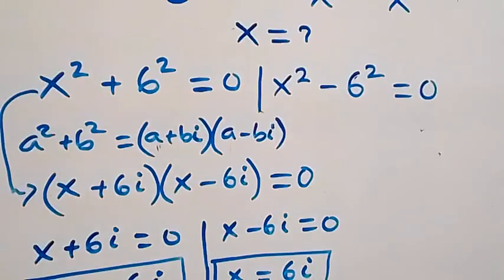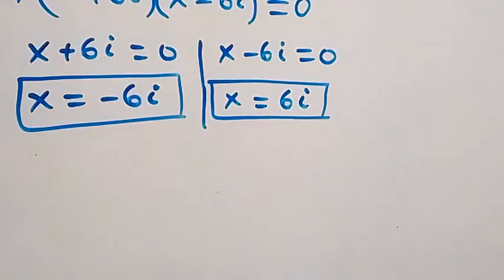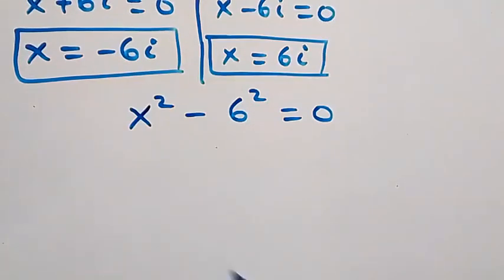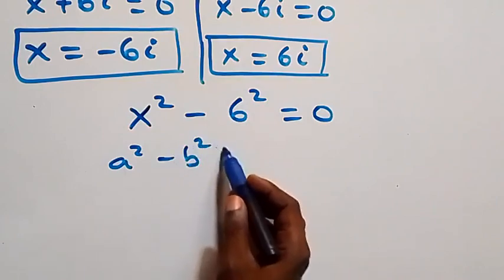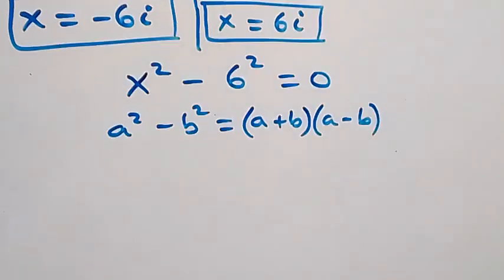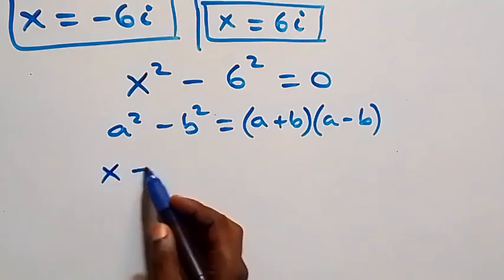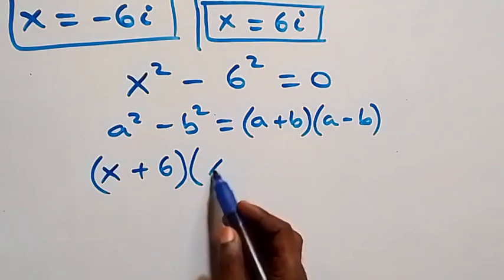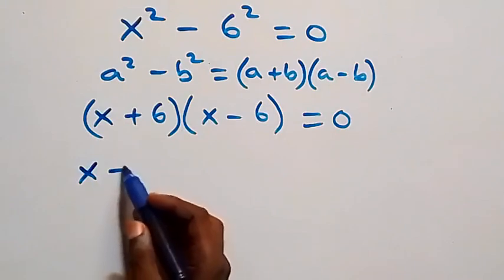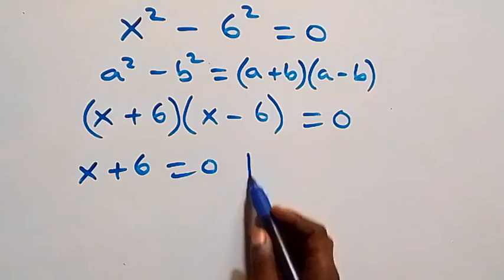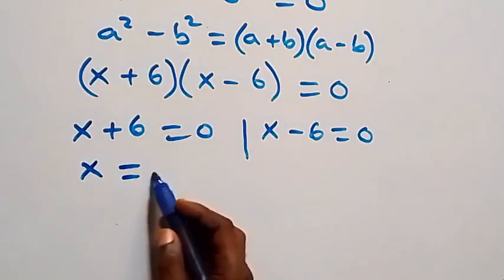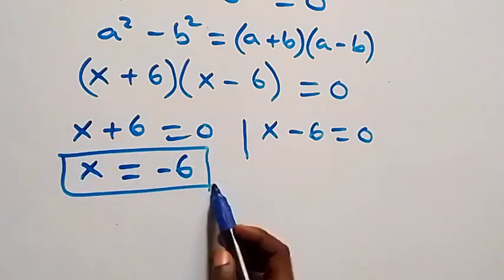Solving the second case: x squared minus 6 squared equals 0. This follows the difference of two squares: a squared minus b squared equals (a plus b)(a minus b). So it becomes (x plus 6)(x minus 6) equals 0. We have two cases: x plus 6 equals 0 giving x equals minus 6, or x minus 6 equals 0 giving x equals 6. These are real solutions.